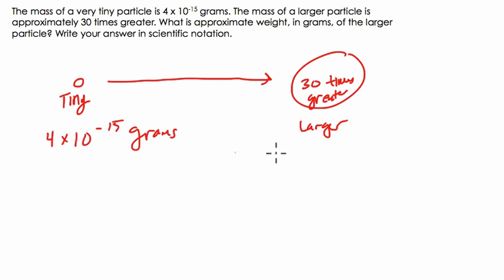Okay, so if we want to know how heavy it is, we just multiply it by 30. So, 4 times 10 to the negative 15th, times 30, which is 3 times 10. And here we get 4 times 3 is 12. 10 to the negative 15th times 10 to the first is 10 to the negative 14th. We add a power of 10 there.